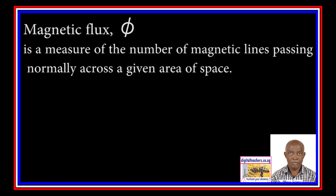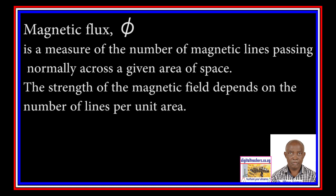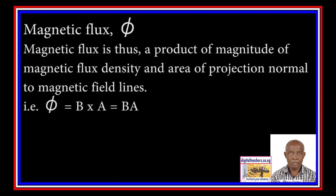Magnetic Flux Phi is the measure of the number of magnetic field lines passing normally across a given area of space. The strength of the magnetic field depends on the number of lines per unit area. Magnetic Flux is thus a product of the magnitude of magnetic flux density and the area of projection normal to the magnetic field lines.